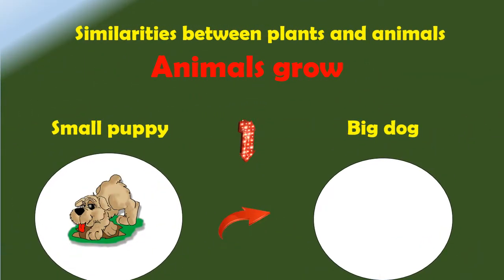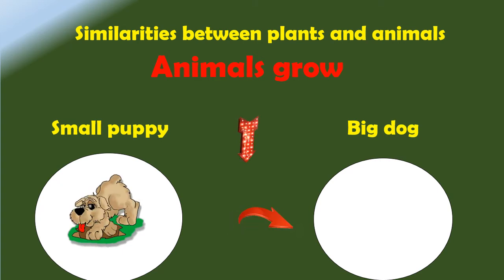Similarities between plants and animals. The first similarity is that plants and animals both grow, and they grow in different sizes.